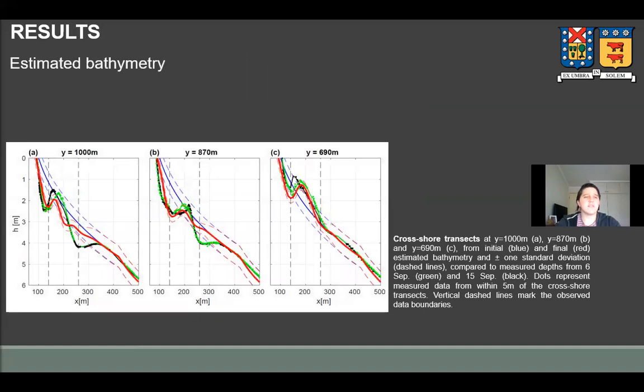And here, results are further illustrated by these individual cross shore transects. In this figure, blue lines are the initial estimate, the red line is the final estimate, and green and black lines are the in-situ surveys from before and after. This proves the capability of the system to retrieve good estimates of surf zone depths, as the final estimate is in good agreement with in-situ data. Particularly with the surveyed sandbar from three days before, which is the green line.